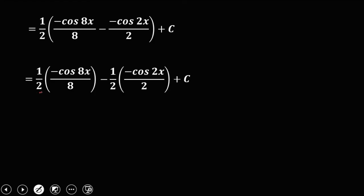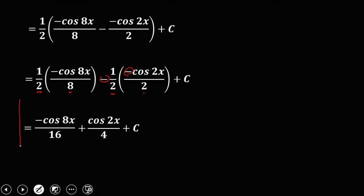Simplifying: 1 half times negative cosine 8x over 8 gives negative cosine 8x over 16. Then negative times negative is positive, and 2 times 2 is 4, giving plus cosine 2x over 4, plus C. So the final answer is: negative cosine 8x over 16 plus cosine 2x over 4 plus C.